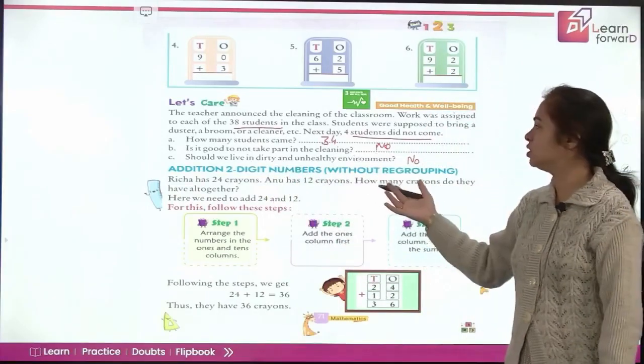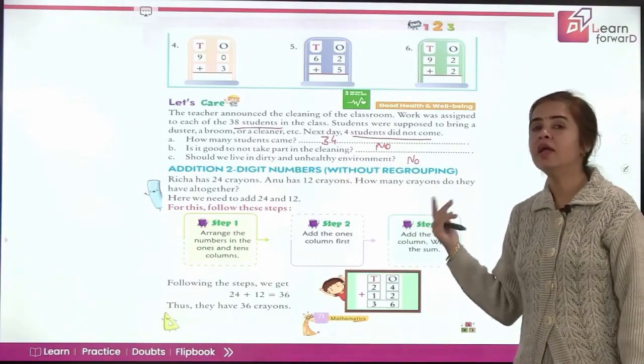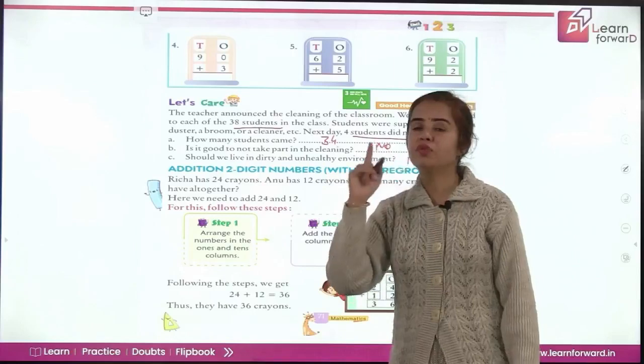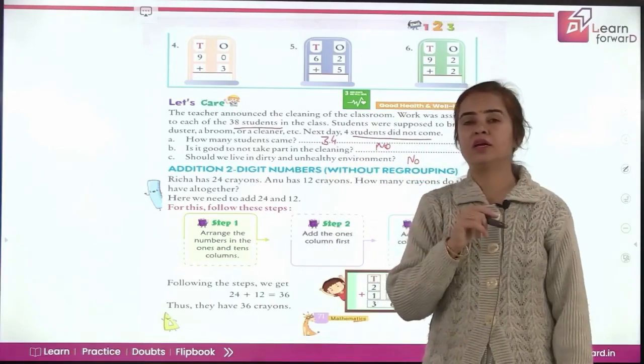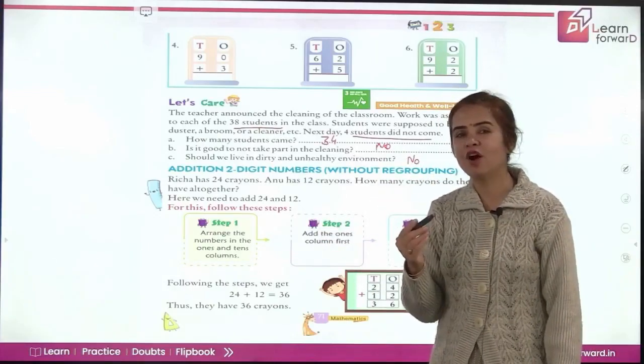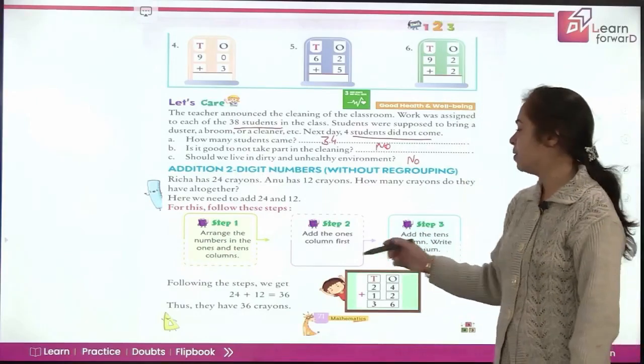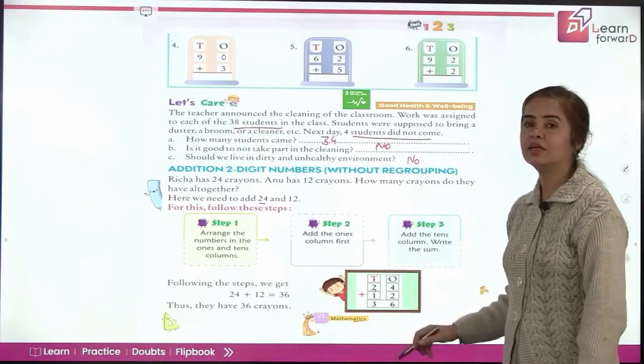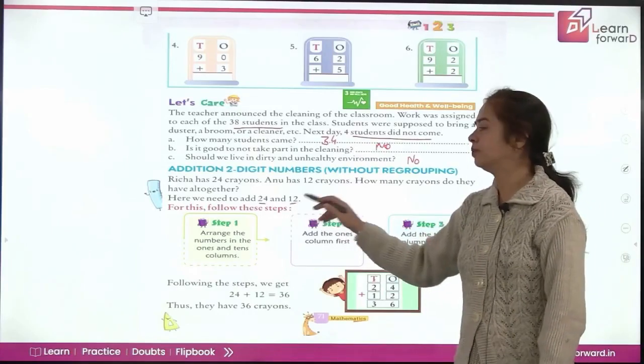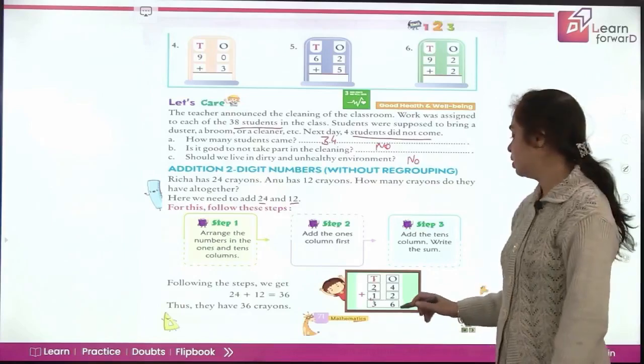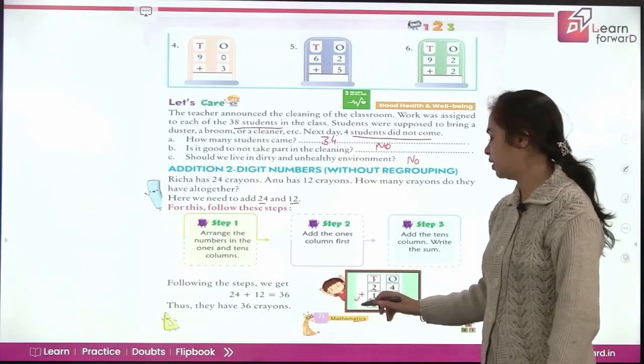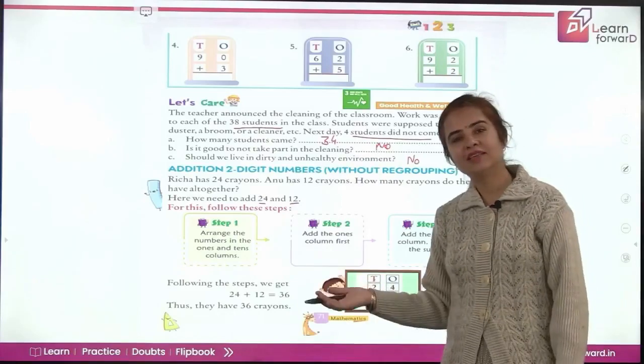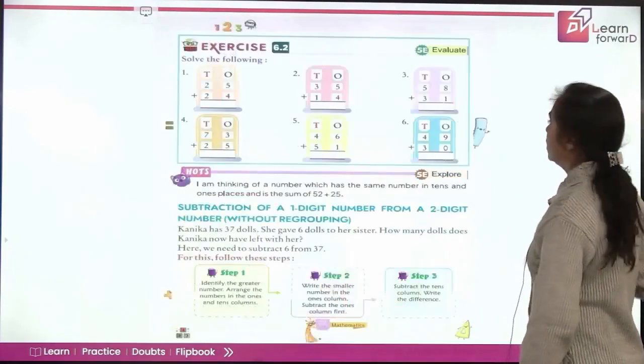Now next going, we will be learning addition of two-digit numbers without regrouping. So two-digit number added to another two-digit number. If we have twenty-four and twelve. Again the same process. First write the places. Then write the digits carefully under the places. Put the plus sign and start adding from? Yes, from the ones place. So let us do it. We will first write TO for tens and ones place. Then write the number twenty-four. Two under the T column, four under the O column, ones column. Then twelve. One under the tens column, two under the ones column. Put the plus sign. Draw a line and start adding from the ones place. So you get four plus two is six and two plus one is three. So this is how you will be adding a two-digit number to another two-digit number.